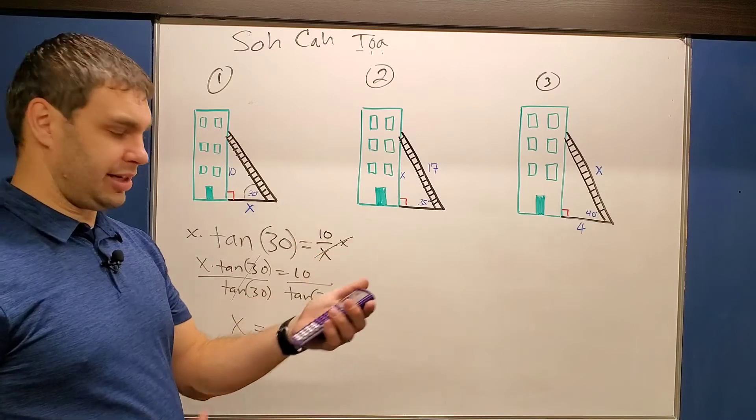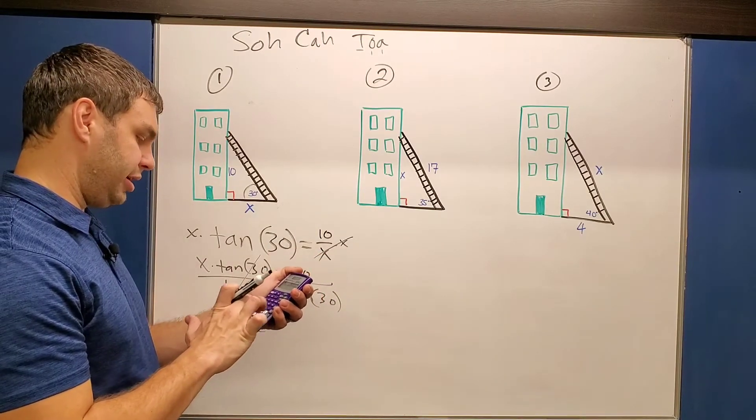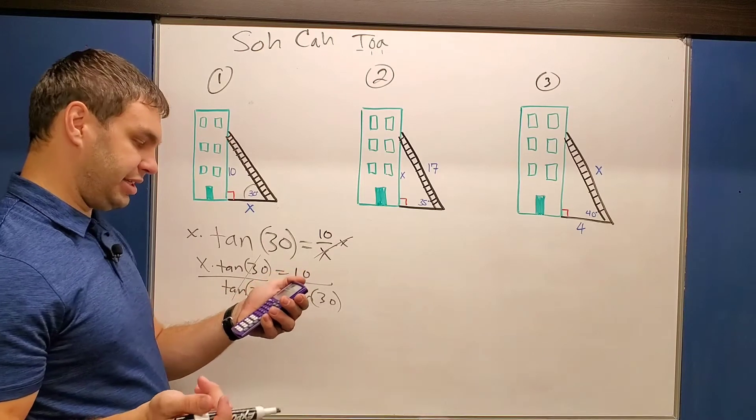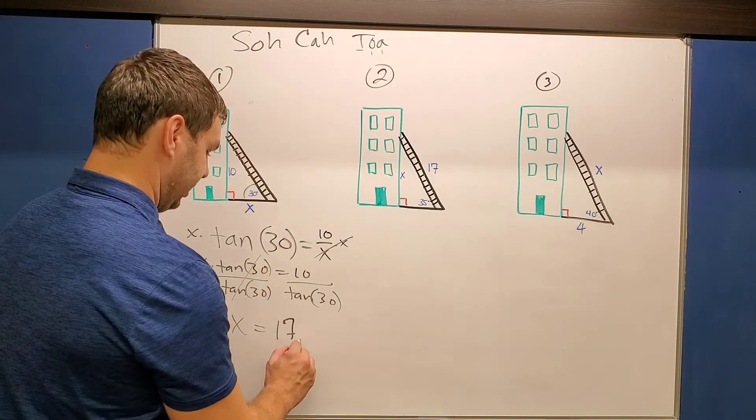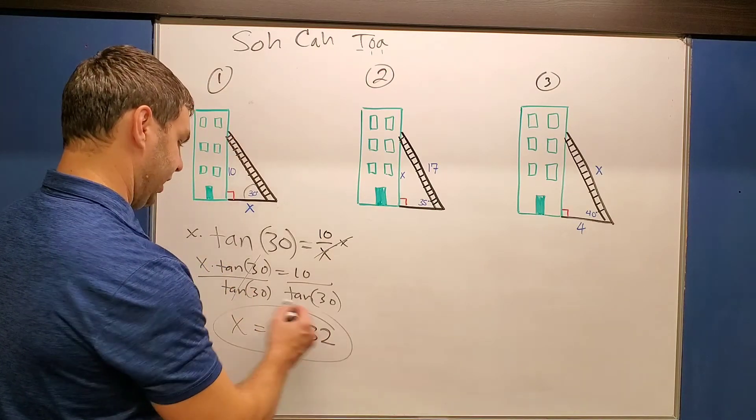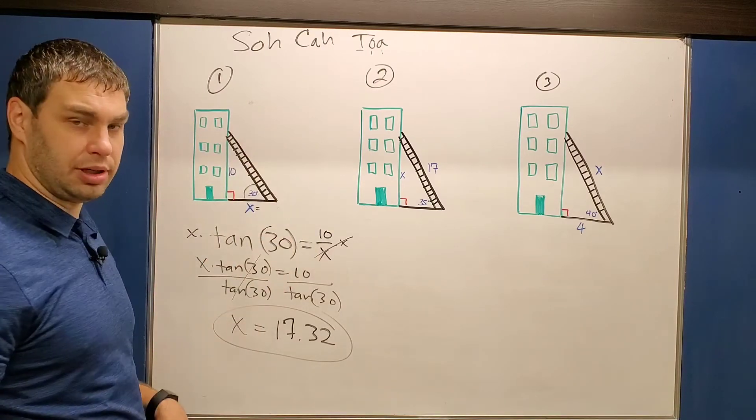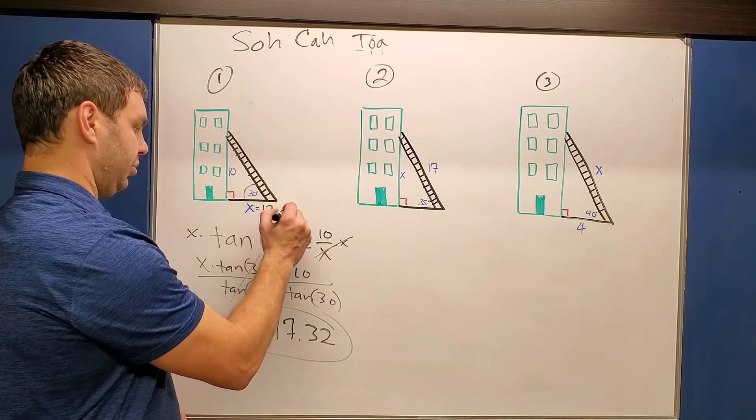And on the right side in the calculator, I can just type it in exactly like it looks, 10 divided by tangent of 30. And this spits out 17.3205. We can just leave it like that. So that tells me that this distance that the ladder is away from the wall is 17.32.